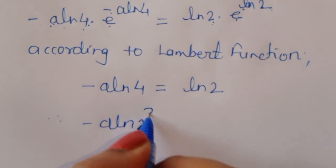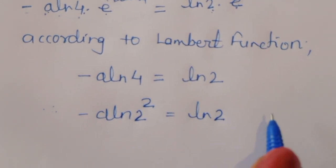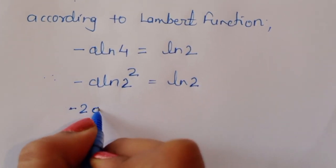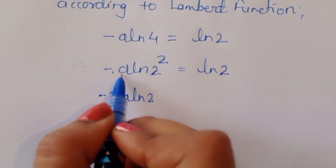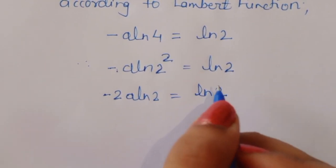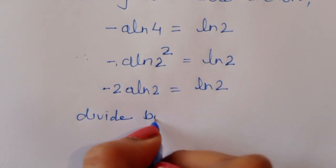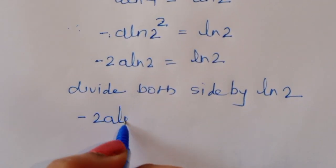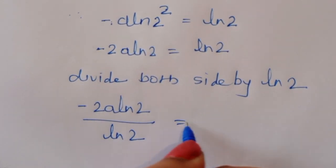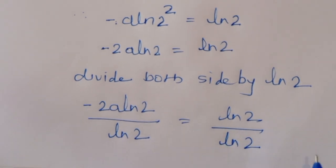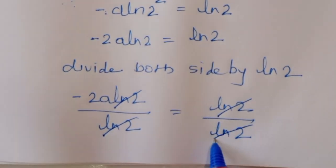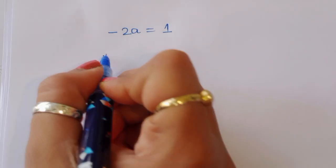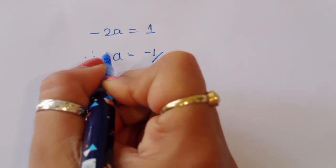So minus a times ln(2 squared) equals ln 2, which gives minus 2a ln 2 equals ln 2. Dividing both sides by ln 2, the ln 2 cancels and we get minus 2a equals 1, therefore a is equal to minus 1 by 2. This is the value of a from the first method.